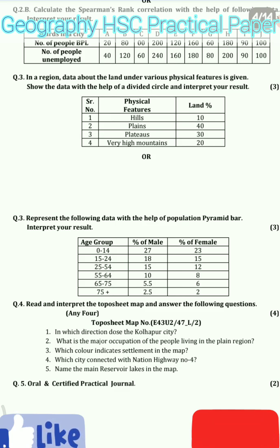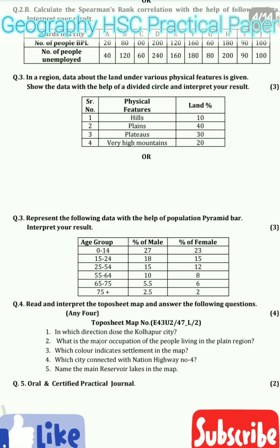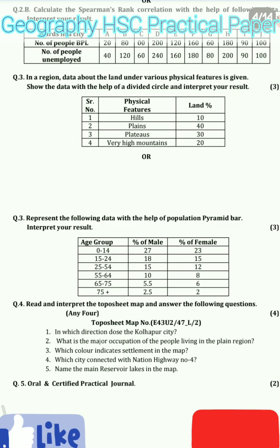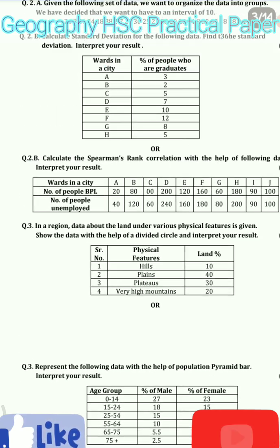The last question is question 5. Aapka jo viva hai, aapki jo oral hai, woh aur aapka jo journal hai — dono mila ke aapko 2 marks diye jayenge. So this is all about the practical paper and the demo practical paper. Isi tarike ka practical paper aapko board exam mein milega, which carries total 20 marks.